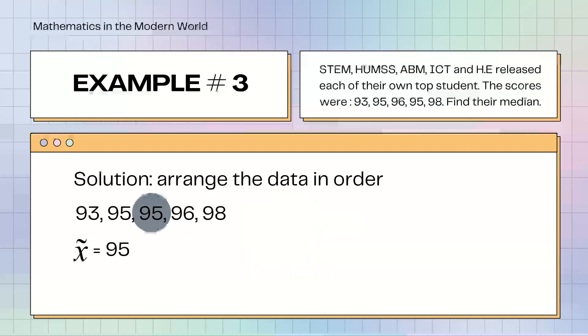Example number 3. STEM, HUMES, ABM, ICT, and HE released each of their own top student. The scores were 93, 95, 96, 95, 98. Find their median. After we arranged the data in order from least to greatest, the median of example number 3 is 95.